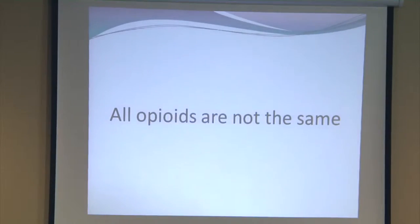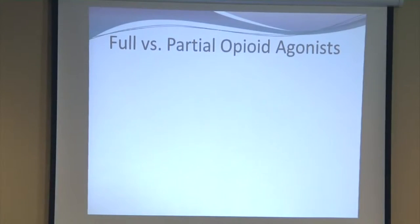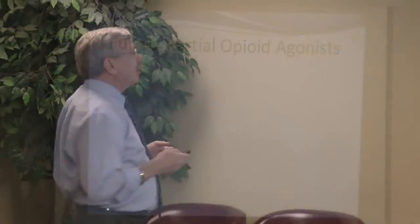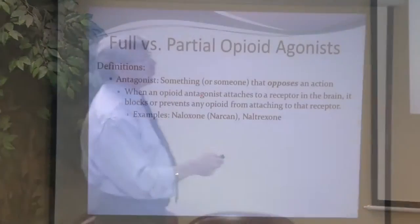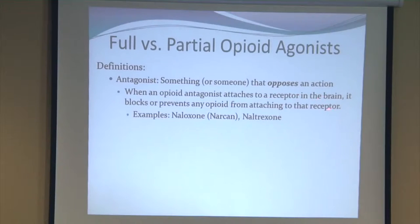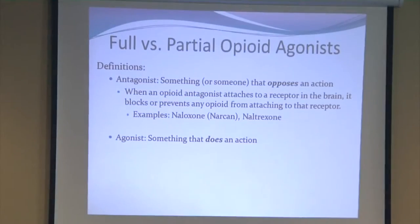All opioids are not the same — full versus partial agonist. Most people don't know the word agonist, but we know what an antagonist is: something or someone that opposes an action. When an opioid antagonist attaches to the receptor in the brain, it blocks or prevents any opioid from attaching. Examples are naloxone — brand name Narcan — and naltrexone. An agonist is something that does an action.